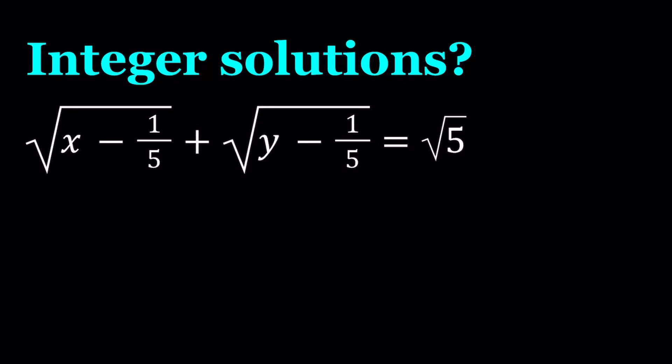Hello everyone. In this video we're going to be solving an equation for integer solutions. We have square root of x minus 1 over 5 plus the square root of y minus 1 over 5 equals square root of 5. And we're going to be looking for integer values of x and y.